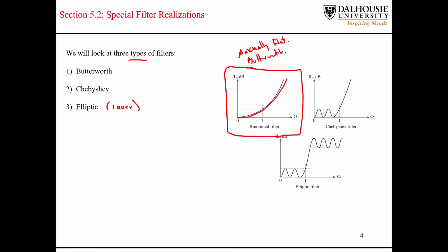The second type of filter is a Chebyshev filter. In the pass band, the Chebyshev filter has some ripple. The amount of ripple is one of the things that you design for — common acceptable levels of ripple are like 1 dB and less. Sometimes the ripple will appear in the stop band for the Chebyshev filter, so it would be flat in the pass band and then the ripple appears in the stop band.